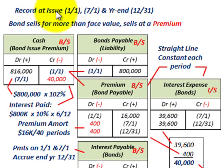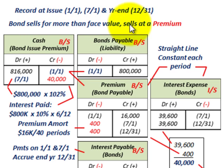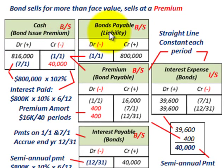We're just going to be looking at the first year, and from this you can determine what it would be for the next 20 years. We'll start where the bond sells for more than the face value — that is, it sells at a premium. We need to set up a cash account, a bonds payable liability account, a premium account, and an interest expense account.